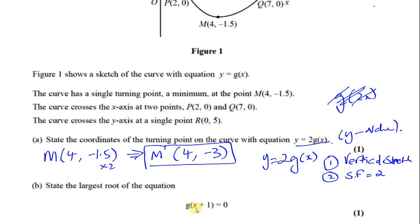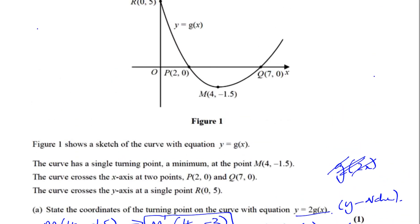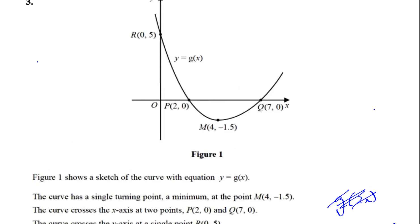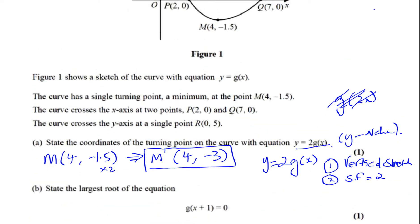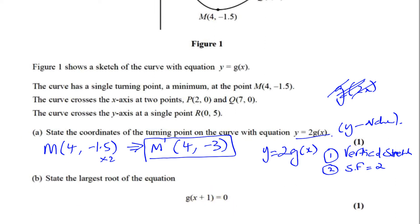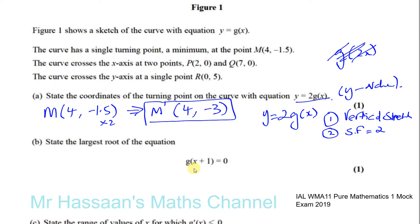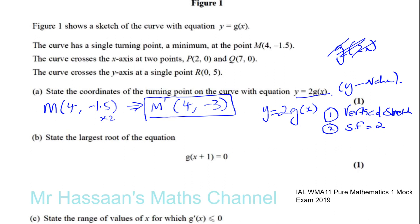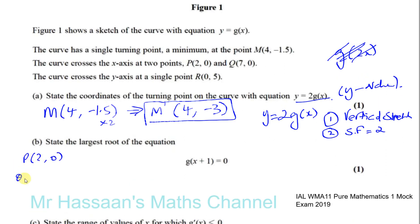Part (b) says: state the largest root of the equation G(X+1) = 0. The roots of an equation are where the curve passes through the X-axis — sometimes called solutions or zeros. The roots of Y = G(X) are currently at P(2, 0) and Q(7, 0). The equation G(X+1) = 0 represents a transformation where X has been replaced by X+1.